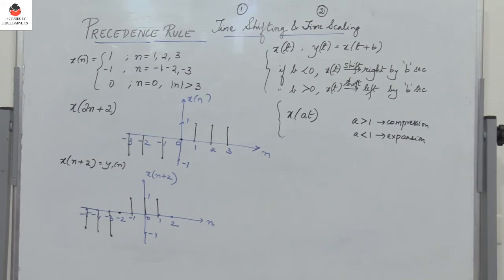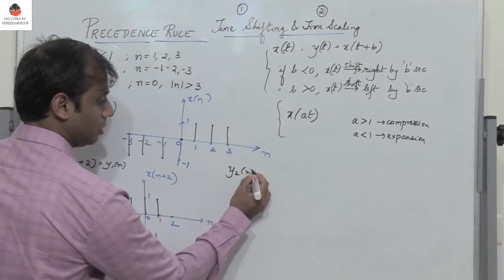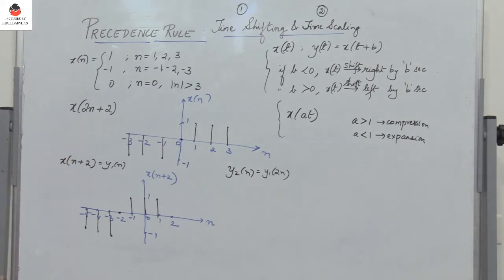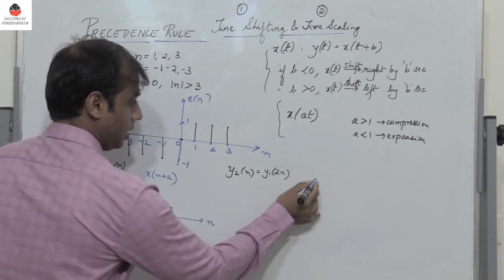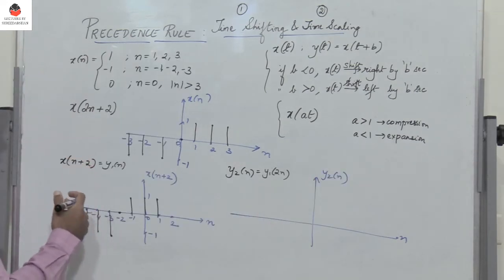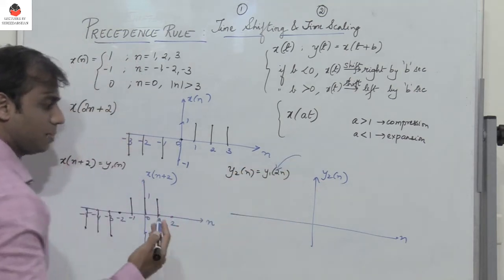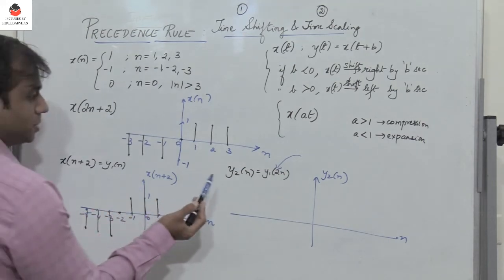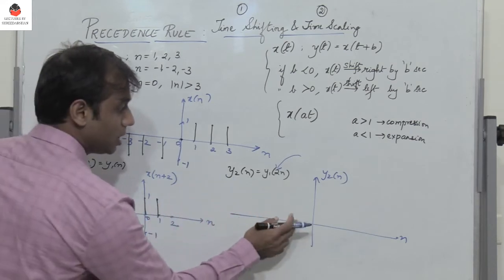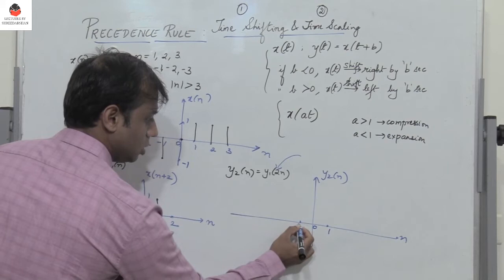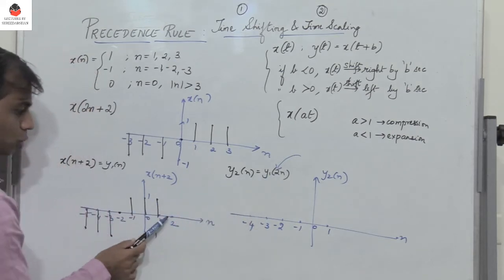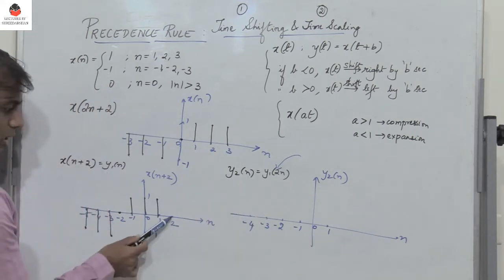So this is x of n shifted left by 2 units, which is y1 of n. Now this signal has to be scaled. Let y2 of n equal y1 of 2n — the scaling factor is 2. Since a is greater than 1, the signal gets compressed. y2 of 1 will be y1 of 2, so what is present at 2 will be present at y2 of 1. When I put n equal to 1, y1 of 2 equals y2 of 1, so I get a 0 there. Putting n equal to 0, y1 of 0 equals y2 of 0 — I have an impulse of amplitude 1, so I get a 1 there.